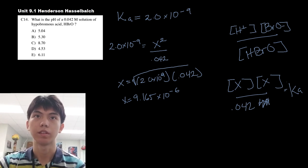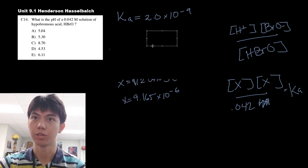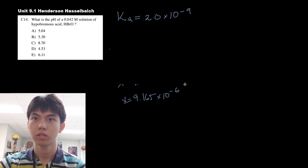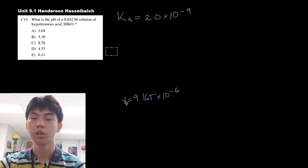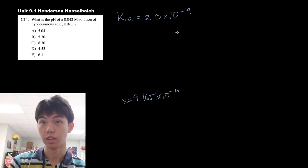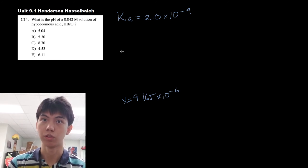Now we can clear all of this out. Wait, we need this Ka still. Once again, it's a vitally important part of this problem. With these two pieces of information here, your x represents your hydrogen ion concentration. We can find the answer to this. We can find the pH of the solution.